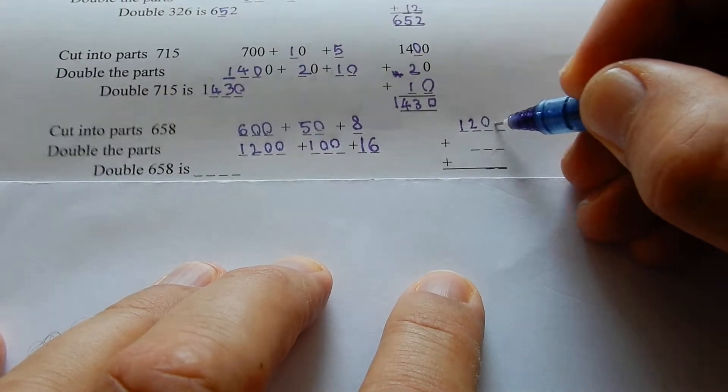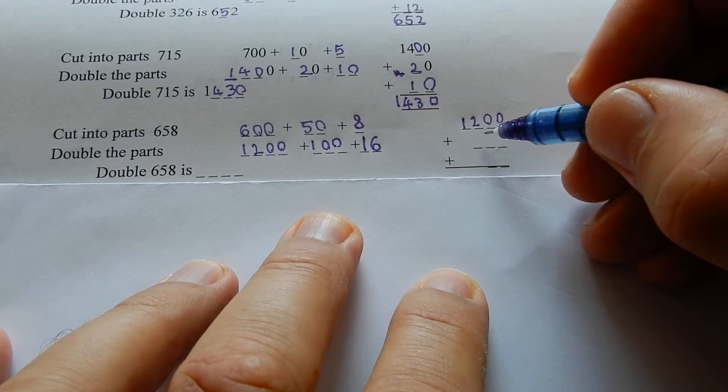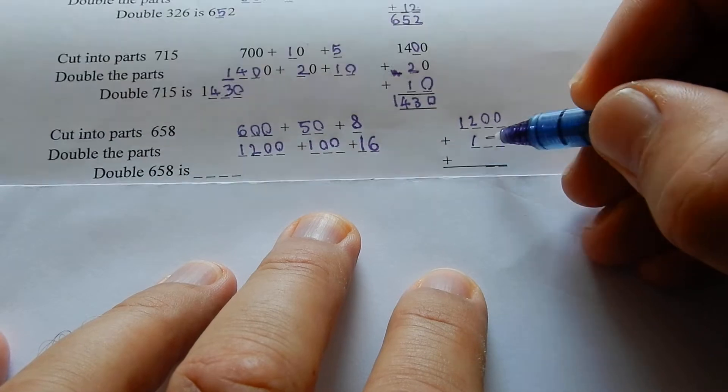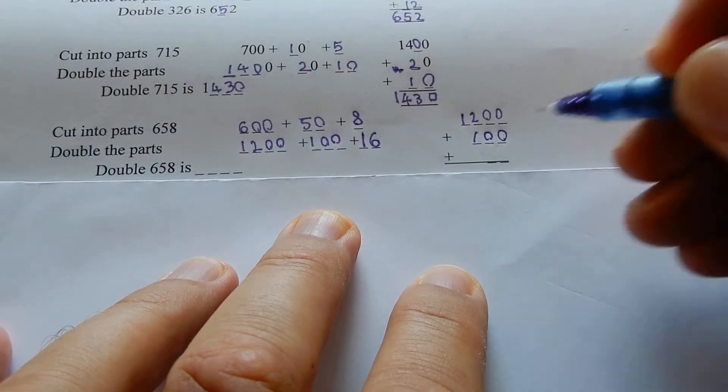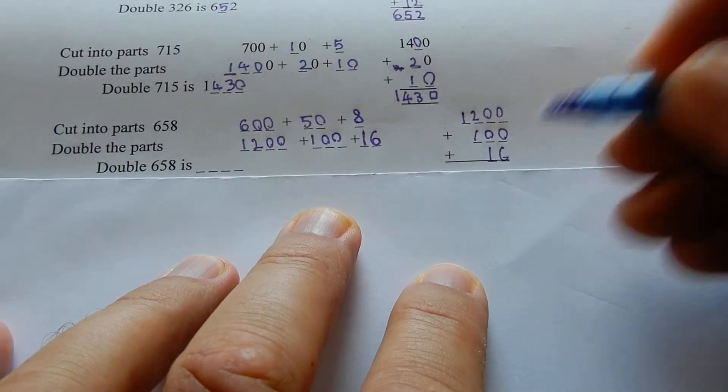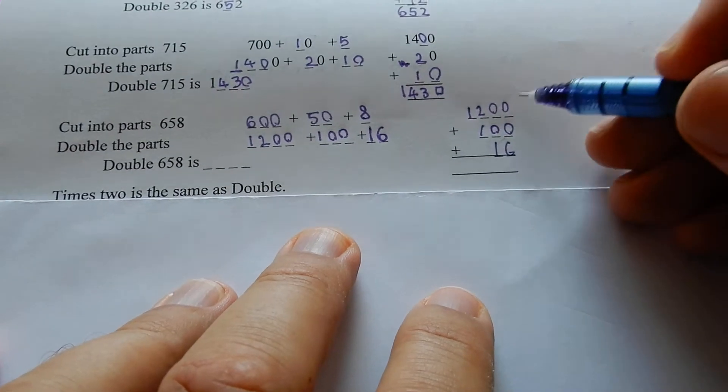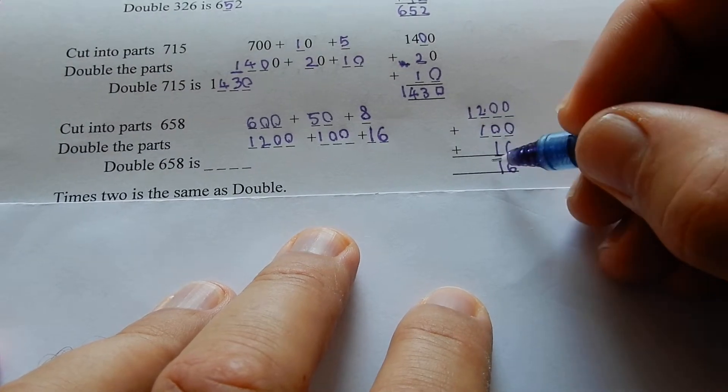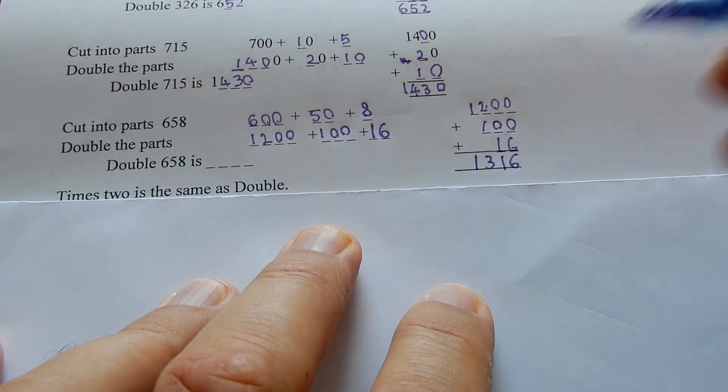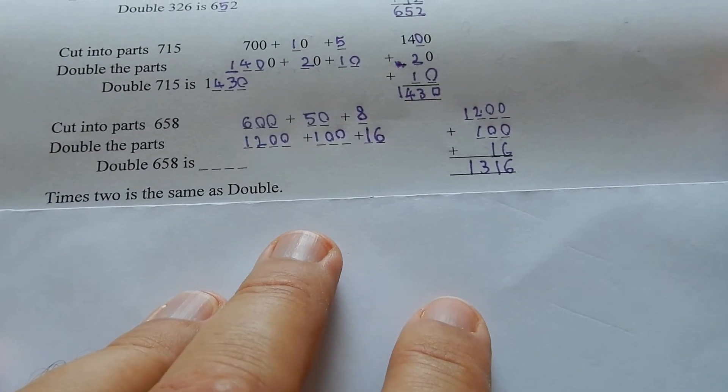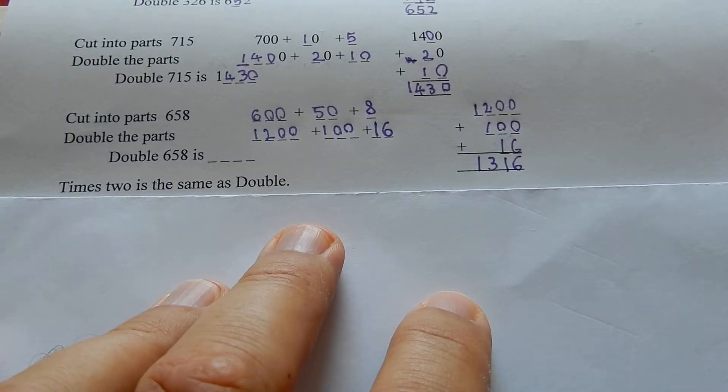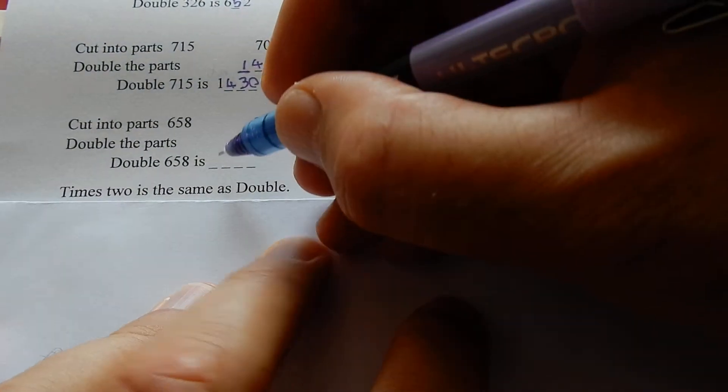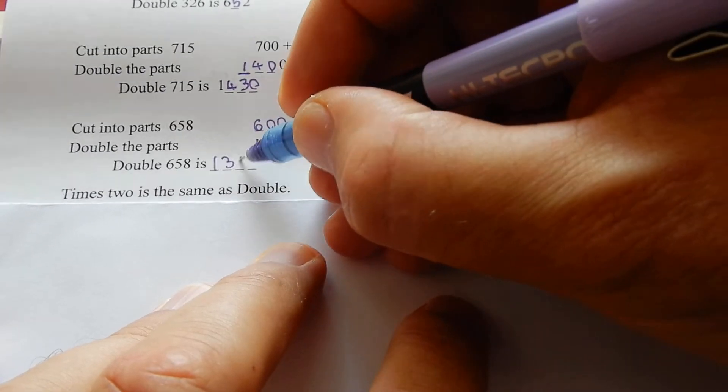Add the parts together: 1200 plus 100 plus 16. 0 plus 0 plus 6 is 6, 0 plus 0 plus 1 is 1, 2 plus 1 is 3. 1316. Double 658 is 1316. Times 2 is the same as double.